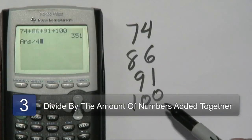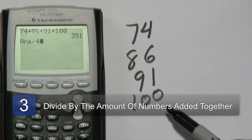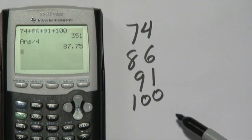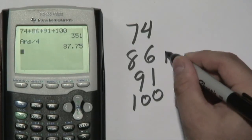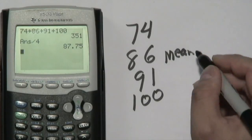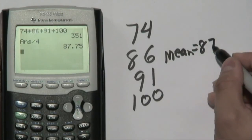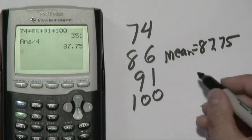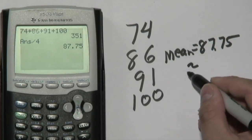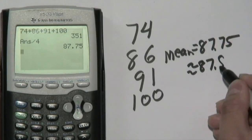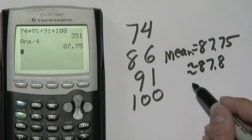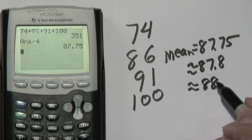That's the number that you always want to divide by, how many numbers that you actually have. So you'll take 351 and divide that by 4. And in this case, it's 87.75. So that means the mean here is equal to 87.75. Now if you were to round to the nearest tenth, it will be 87.8. Or if you want to round even further, it's about an 88 average.